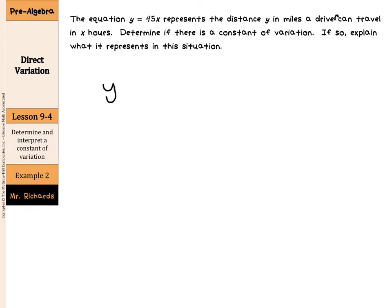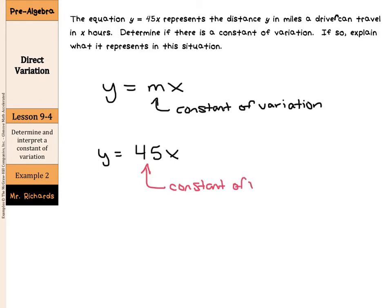Well, Y equals MX, where M is our constant of variation, is the equation we use for direct variations. Now, we have Y equals 45X. Well, it sure looks to me like we do have a constant of variation here, and that's going to be the 45. 45 is the constant of variation in this particular equation.